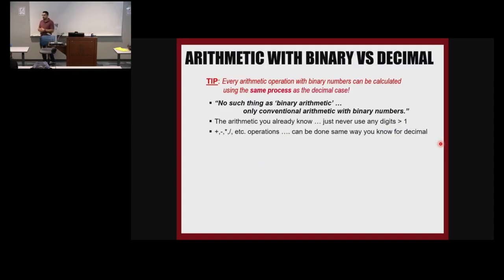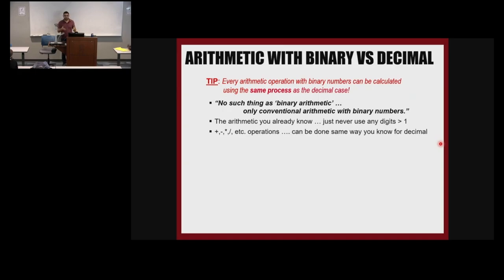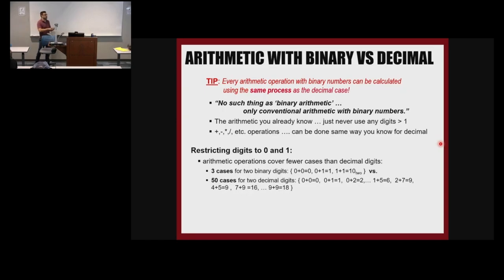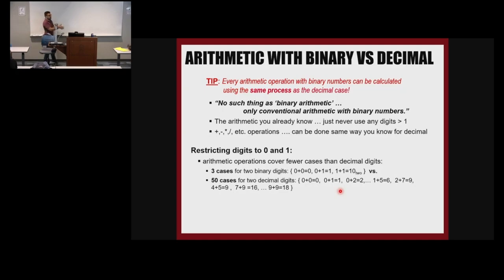Now, a review of binary arithmetic — it's exactly like decimal arithmetic, just with a different range. In decimal we have zero to nine; in binary we have zero to one. The same carry idea applies: if we add one and one, we carry one and the sum is zero. In binary we only have a few cases: zero plus zero equals zero, zero plus one equals one, one plus one equals binary ten. It's basically decimal arithmetic but simpler.